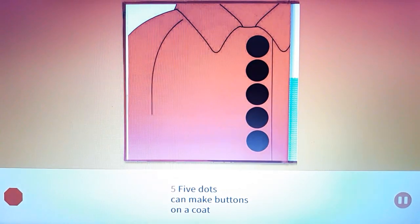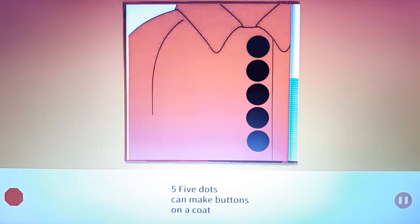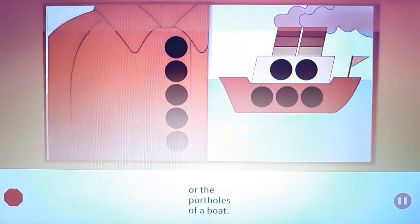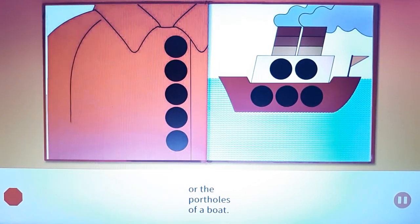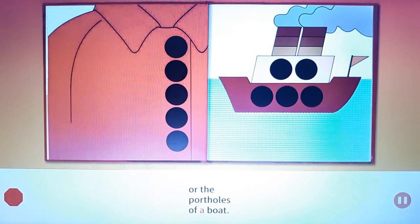Five. Five dots can make buttons on a coat or the portholes of a boat.